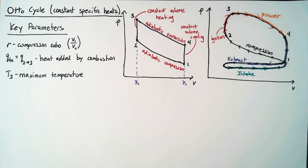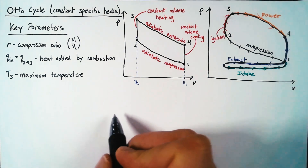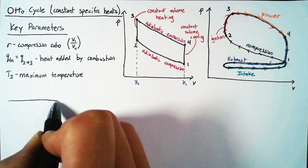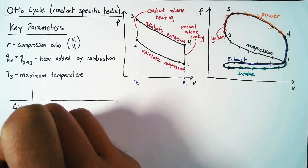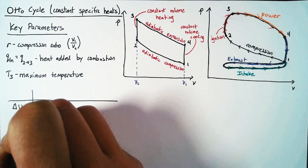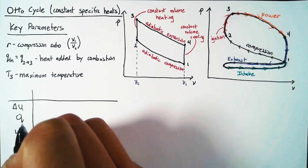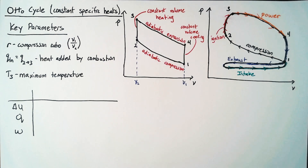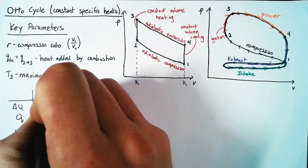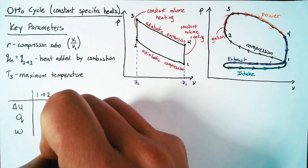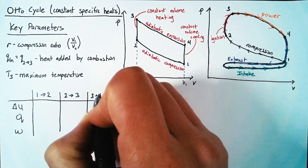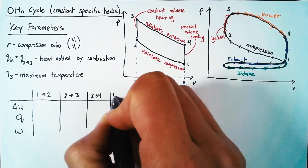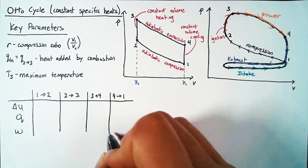Now we get to the analysis. We're going to look at our four processes — compression from one to two, heating from two to three, expansion from three to four, and cooling from four to one — and for each process we're going to determine delta U, Q, and W, all per unit mass, because that makes our life a little bit easier.